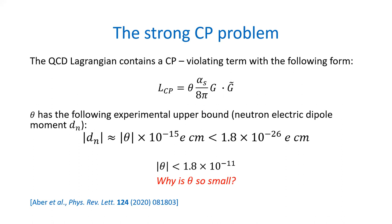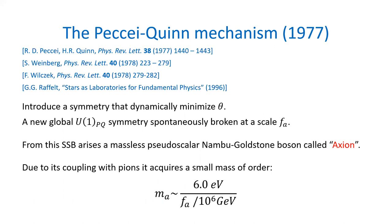The question is: why is theta supposed to be this small? A possible solution was proposed by Peccei-Quinn in 1977 through the so-called Peccei-Quinn mechanism, which introduces a new global U(1) symmetry — the Peccei-Quinn symmetry — that dynamically minimizes this parameter theta, and it is spontaneously broken at a certain scale called the f_a or Peccei-Quinn scale.